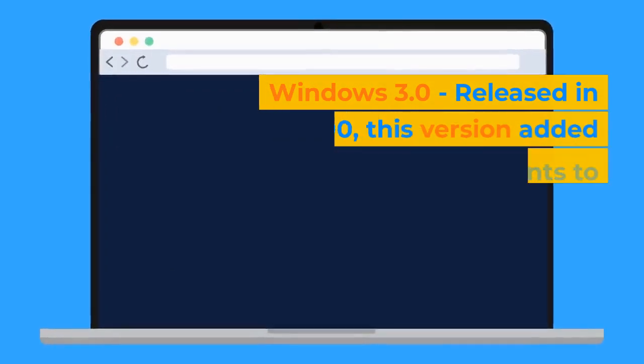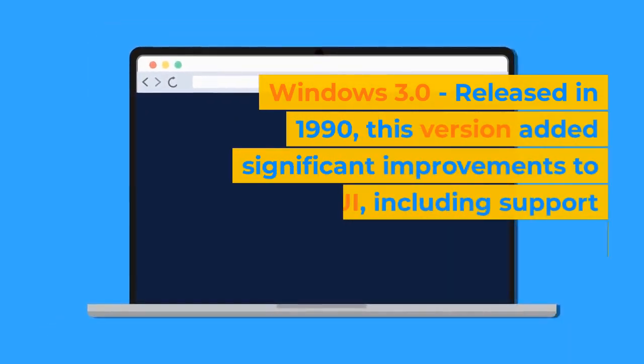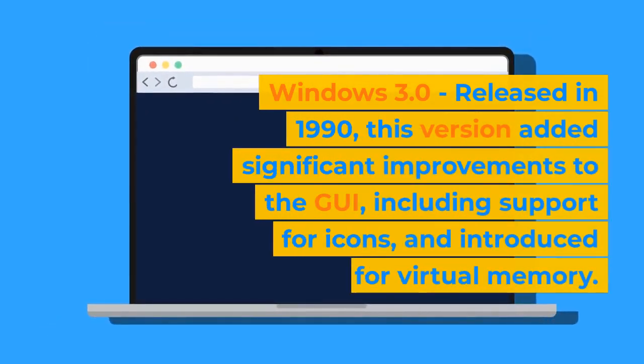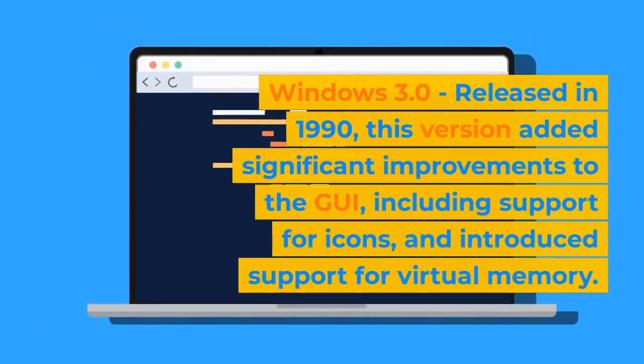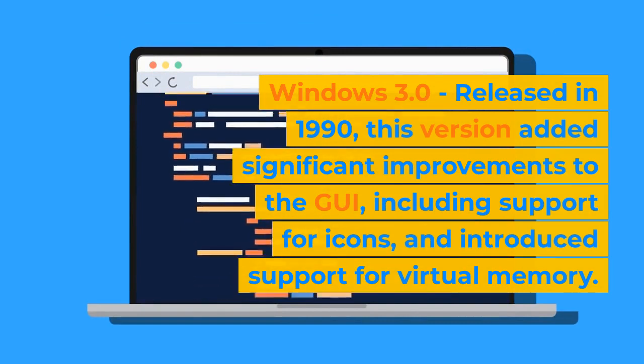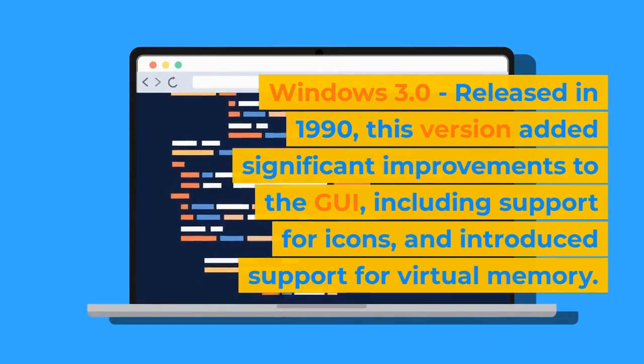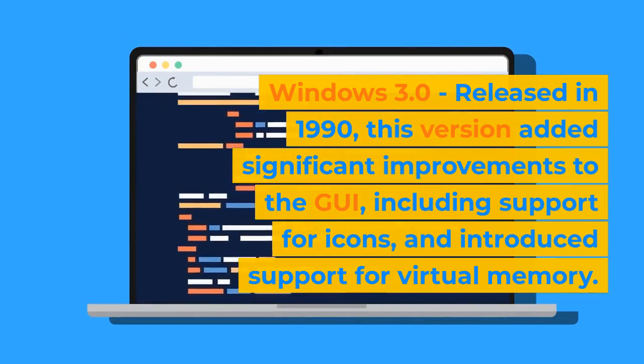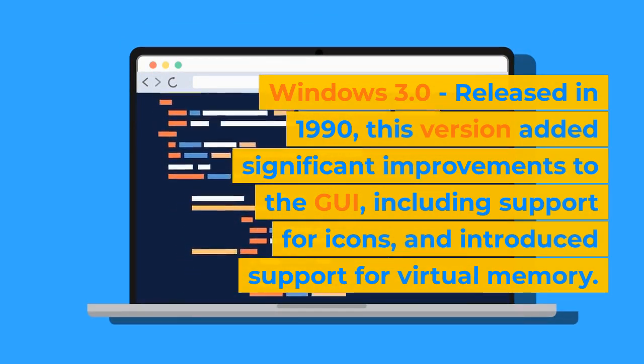Windows 3.0, released in 1990, added significant improvements to the GUI, including support for icons, and introduced support for virtual memory.